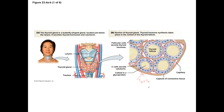The parafollicular cells, also called the C cells, are the ones that produce calcitonin. Calcitonin is a hormone that's used to decrease blood calcium levels. And so if you're going to decrease blood calcium levels, you're going to have to store that calcium, and that's going to happen in the bones.